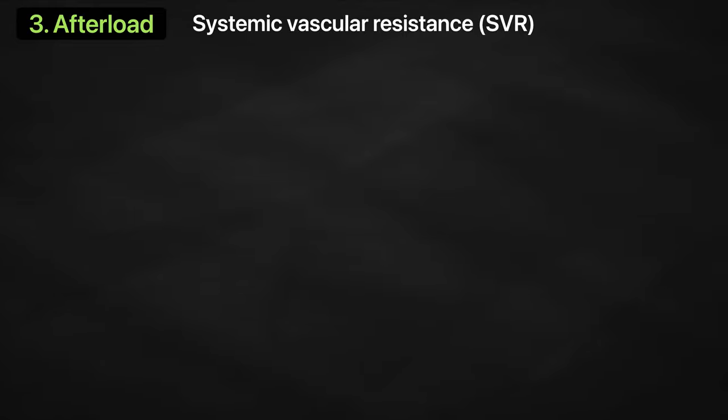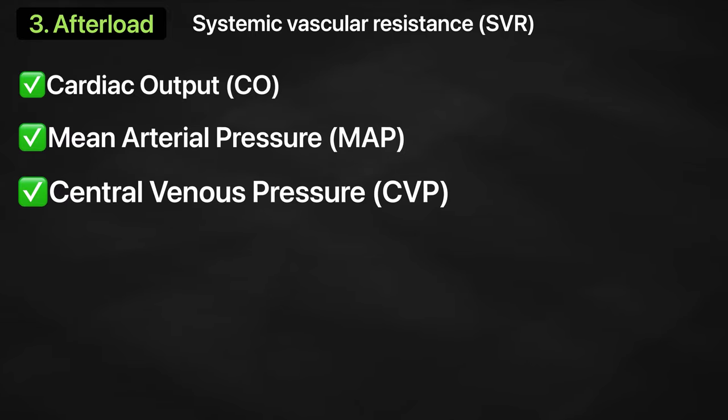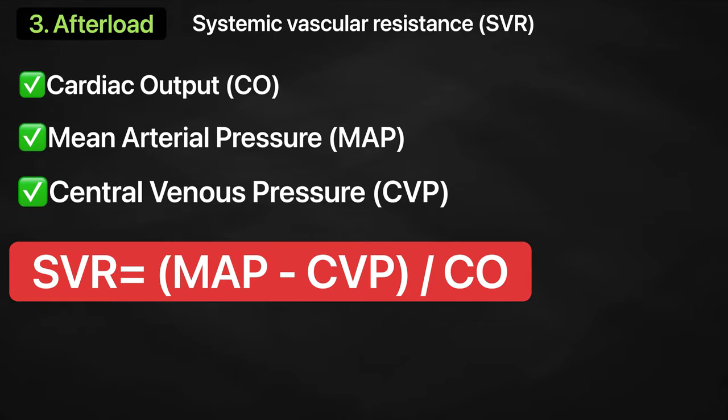Actually, systemic vascular resistance can be calculated if the cardiac output, mean arterial pressure, and central venous pressure is known or available. And the equation for that is systemic vascular resistance equals mean arterial pressure minus the central venous pressure divided by the cardiac output. We will have a more detailed discussion of this in my video about blood pressure.